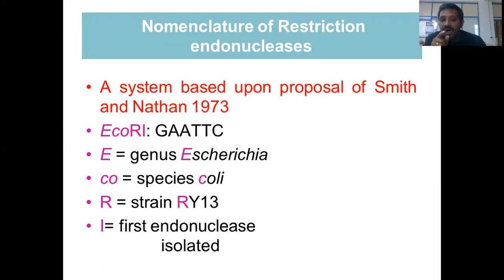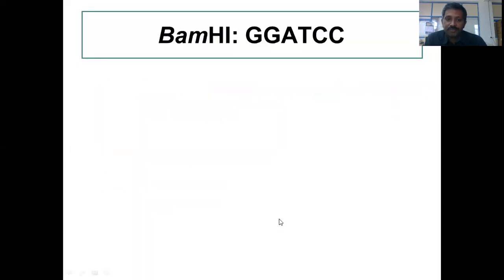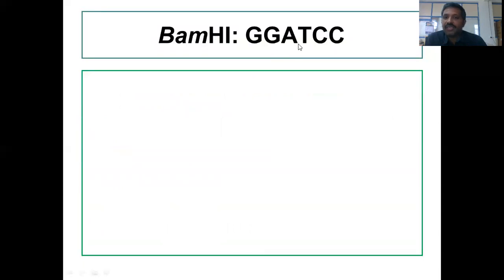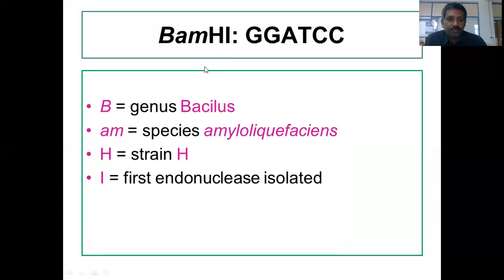To remember the nomenclature, you can use the mnemonic GSSO+D: G for genus, S for species, S for strain, O for order of discovery. For example, BamHI, with restriction site GGATCC — 'B' is genus Bacillus, 'am' is species amyloliquefaciens, 'H' is strain, and 'I' indicates it is the first endonuclease isolated from that system.